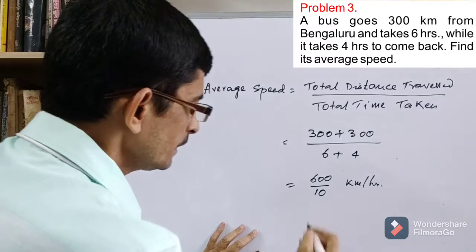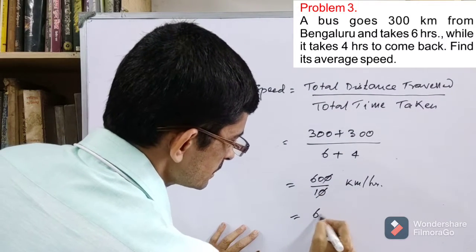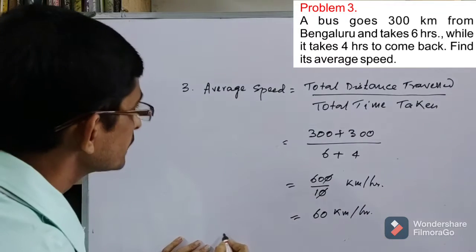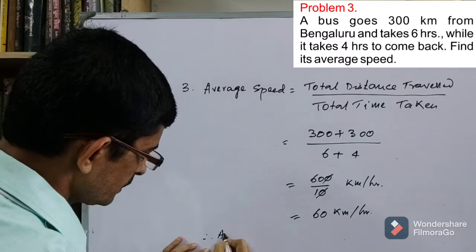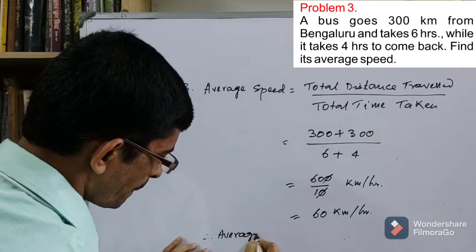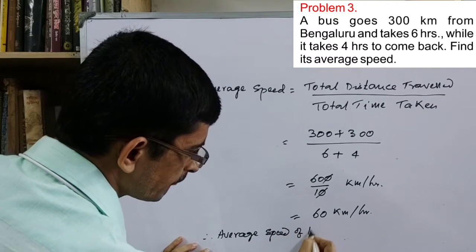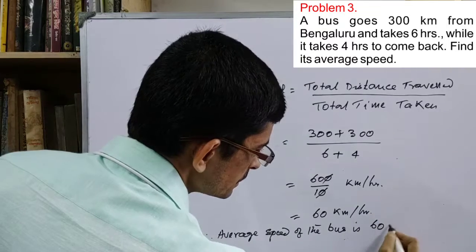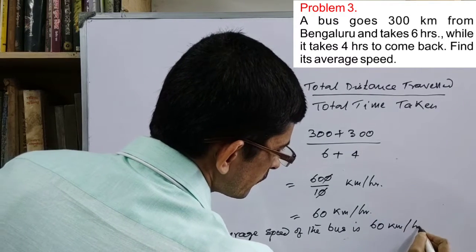Therefore, the final answer is the average speed of the bus is 60 kilometer per hour.